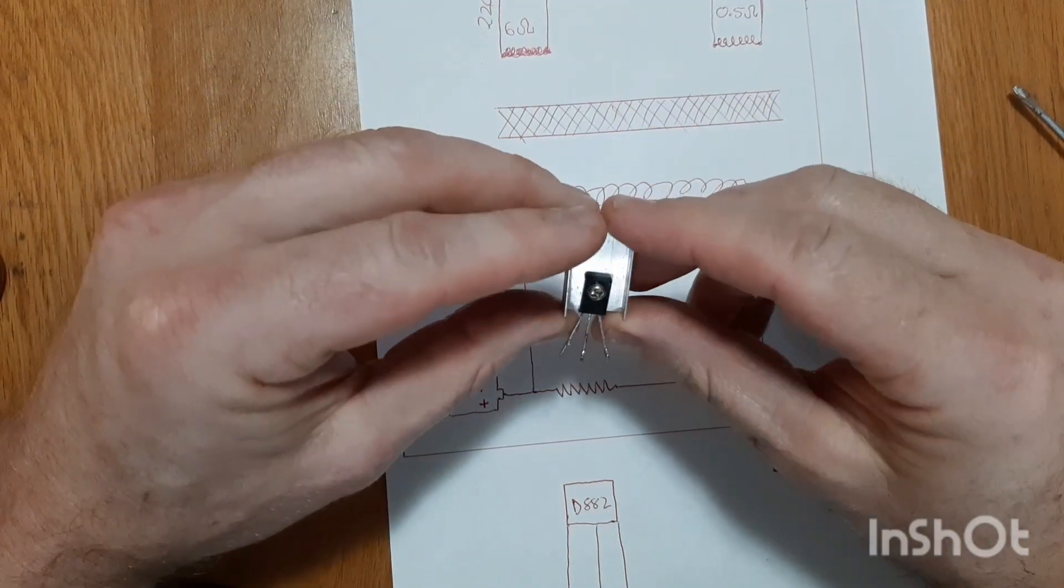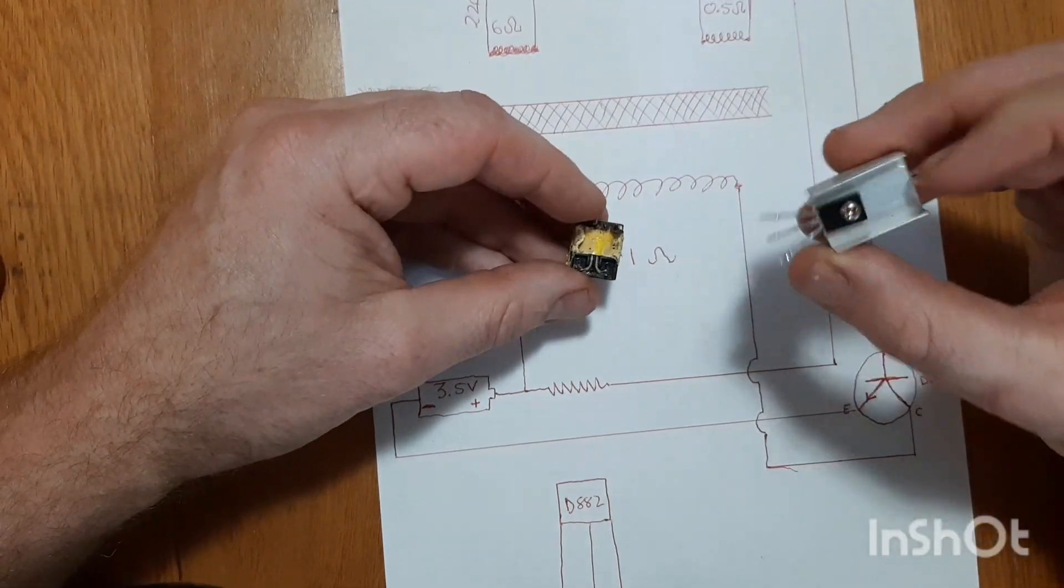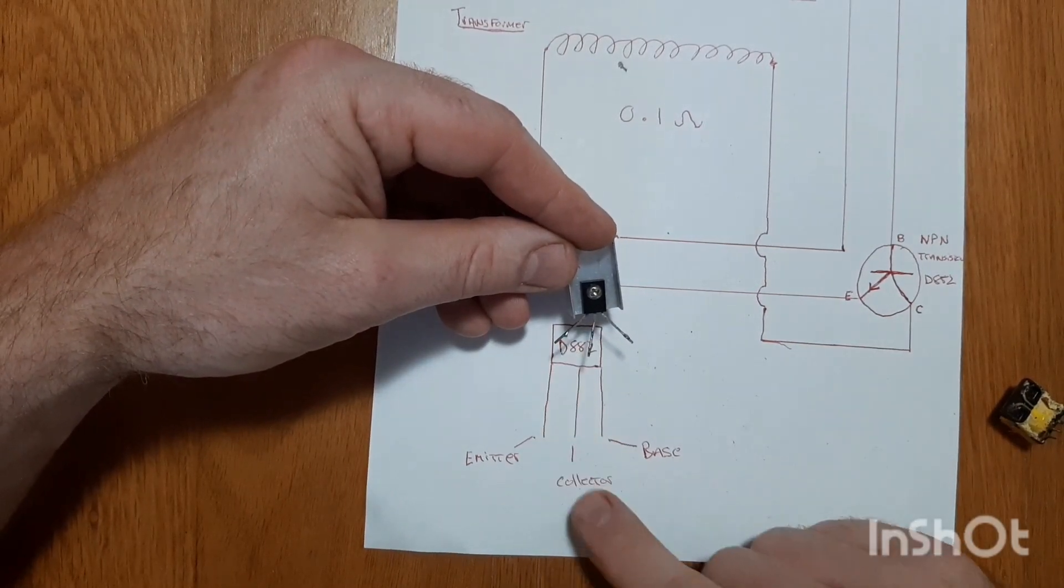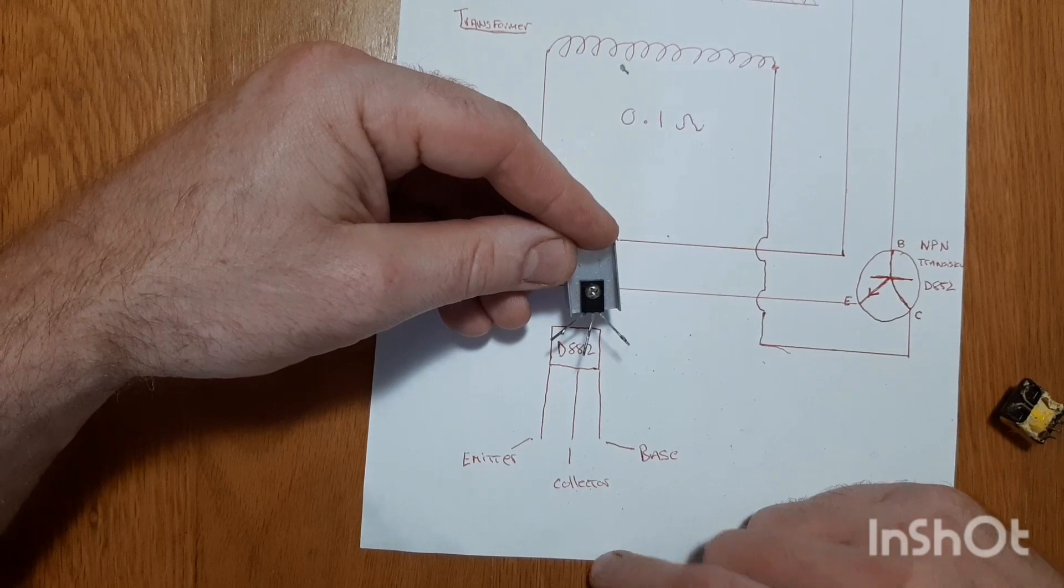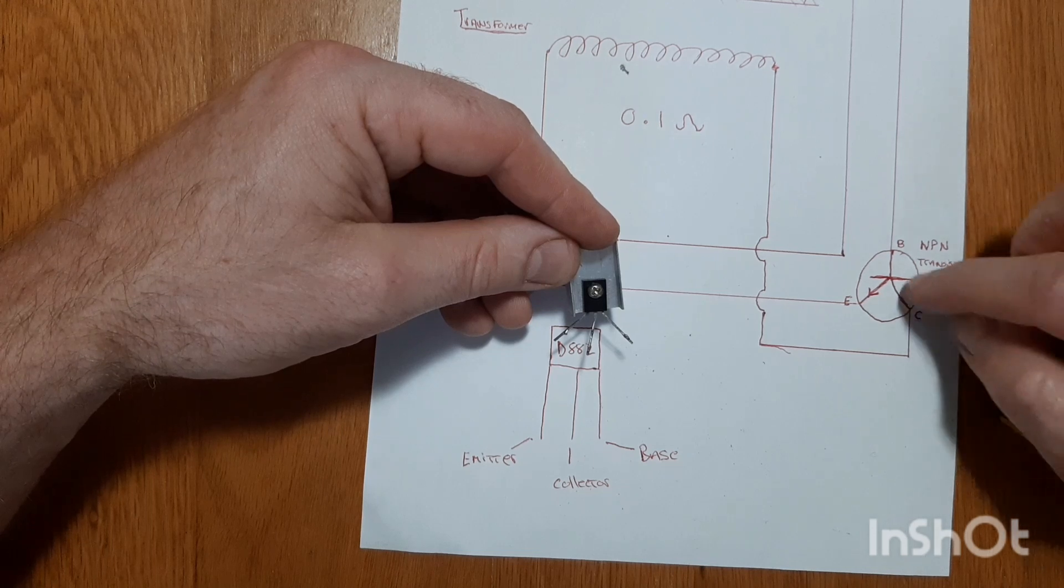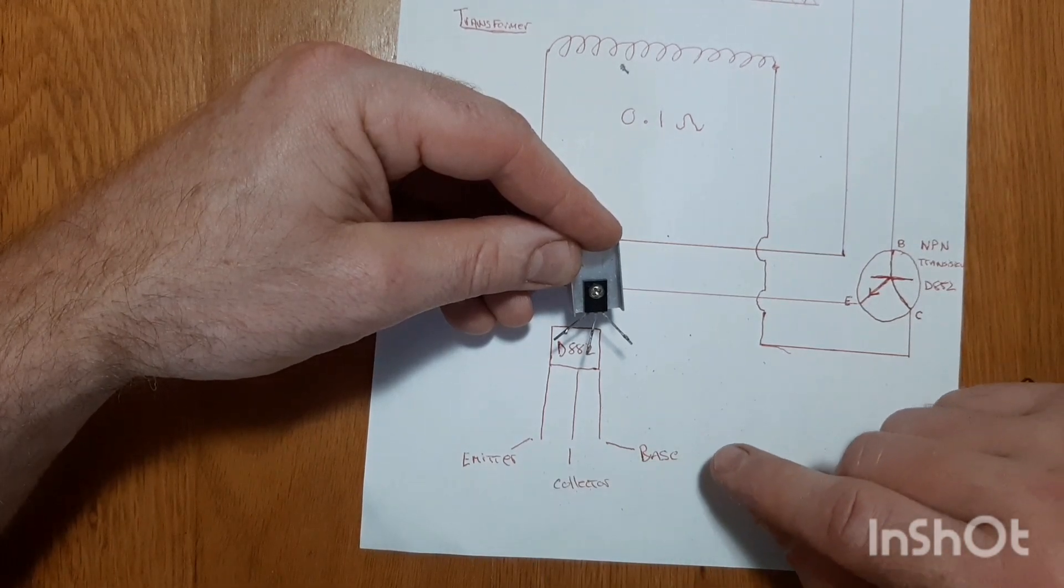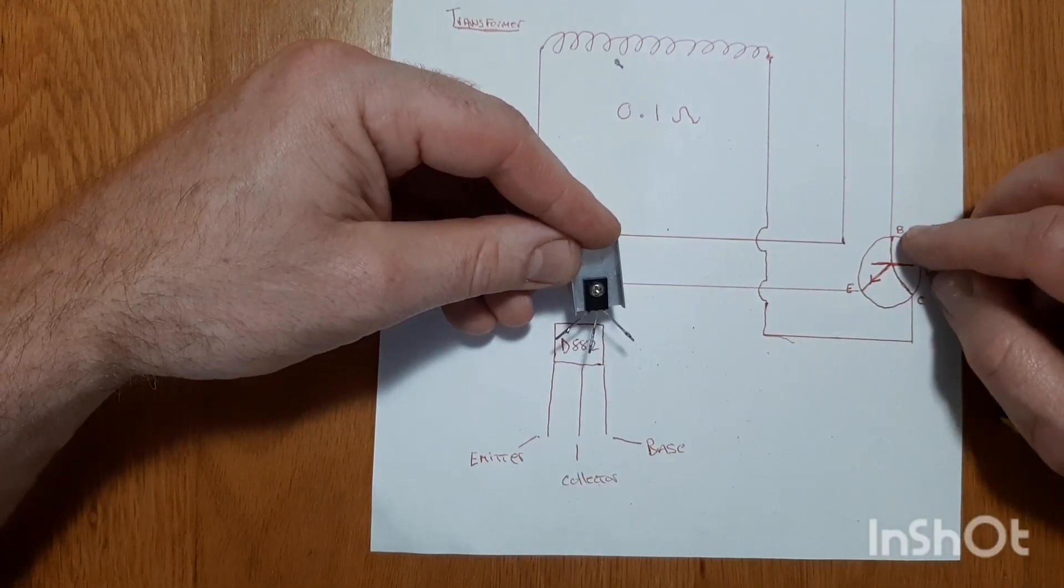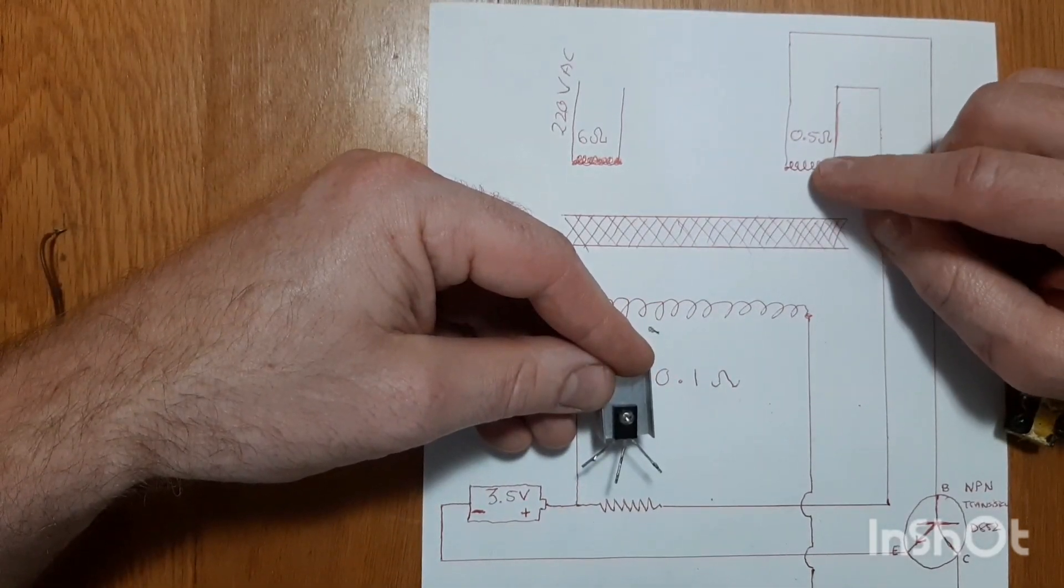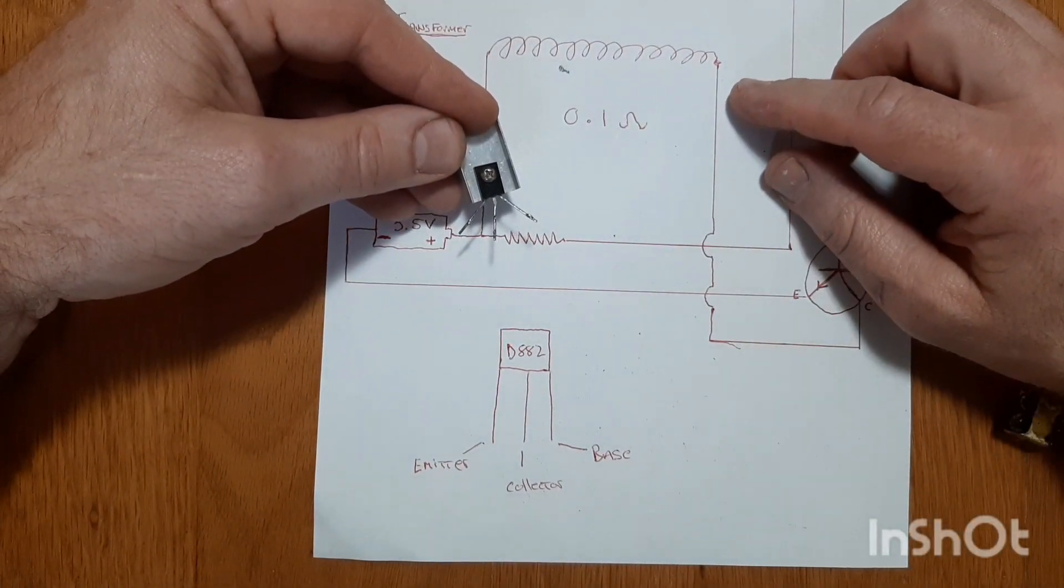Once we got our transistor screwed into position, we're going to take our transformer and connect the transistor to the transformer. Now, as you can see, this is the emitter, collector, and base. And over here, we got the base, emitter, and collector. So, we're going to follow this wiring diagram. We're going to take the base and connect it to the left-hand side of the 0.5 coil. And the collector is going to go to the right-hand side of the 0.1 ohm coil.